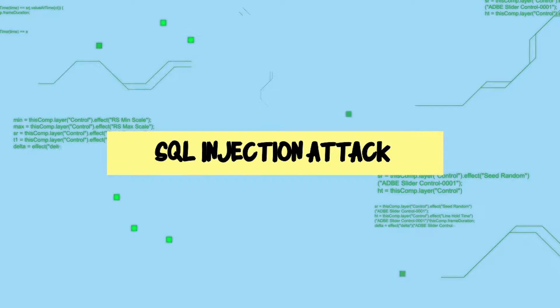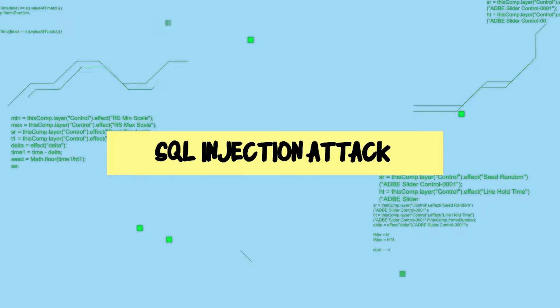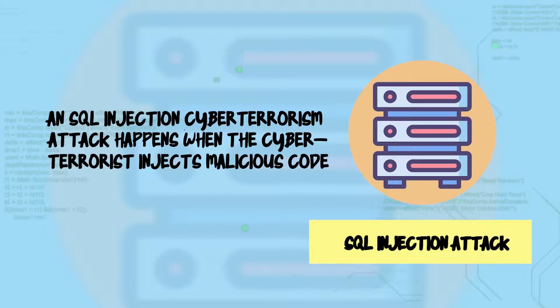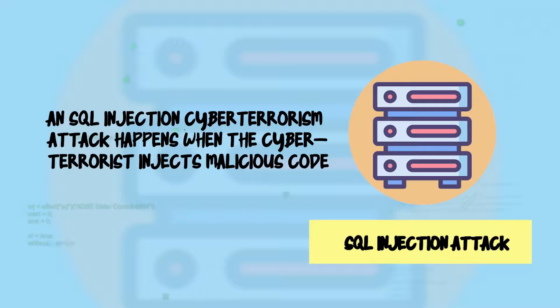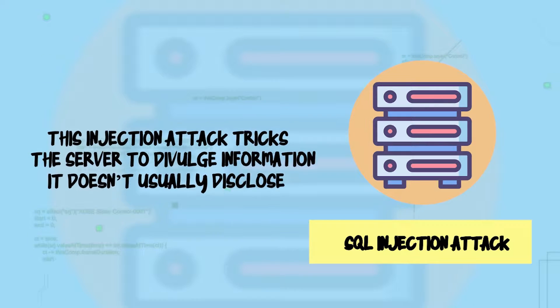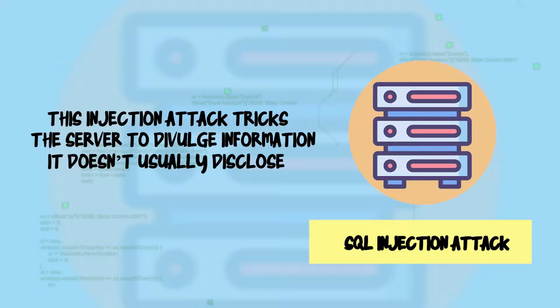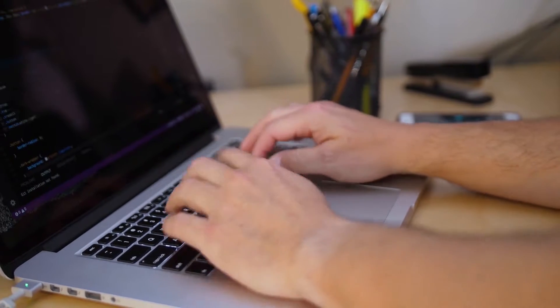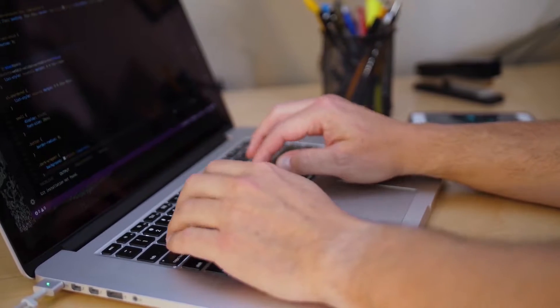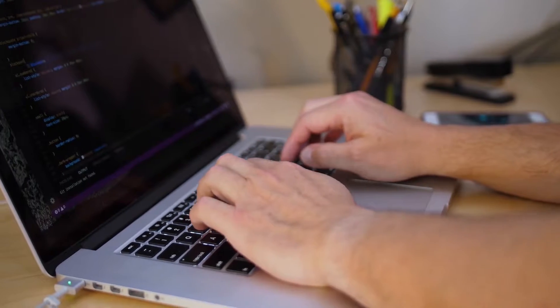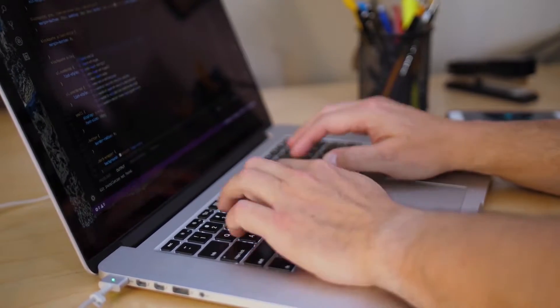Number six: SQL injection attack. An SQL injection attack happens when the cyber terrorist injects malicious code into an SQL server. This injection attack tricks the server into divulging information it doesn't usually disclose. This cyber threat can occur when a fraudster merely submits a malicious script into a susceptible website search box.